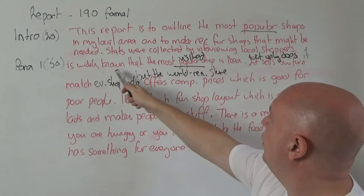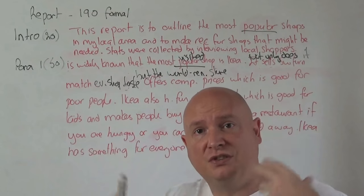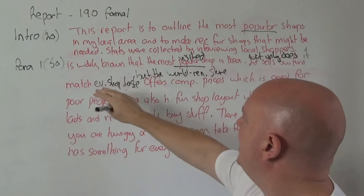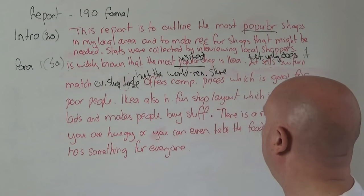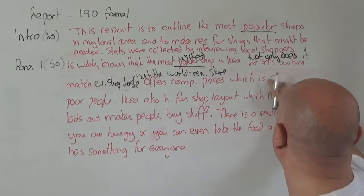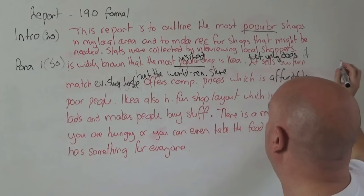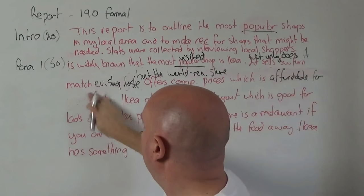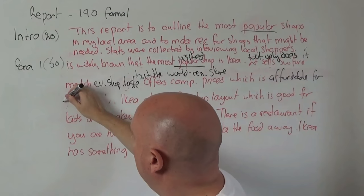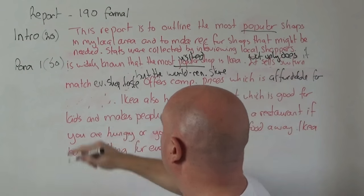Which is — instead of 'good' which is really basic — which is affordable for all consumers. Also, IKEA has a fun shop layout. But I don't like the word 'also' because it's quite basic. We already had 'also' in our inversion. So I might change 'also' to 'in addition' and put that at the beginning: 'In addition, IKEA has a fun shop layout which makes the shopping experience enjoyable.' I'm going to take that out because the word limit is already getting a bit big. But do you see what I mean? That's what you need to do.